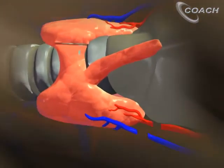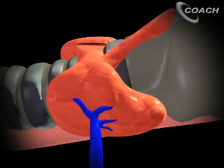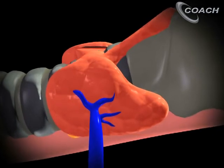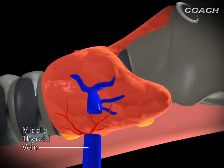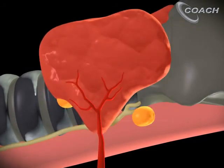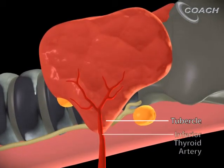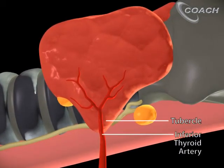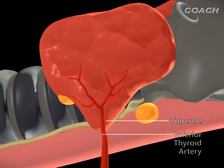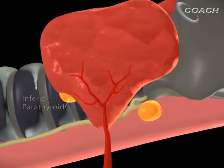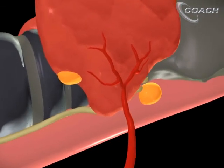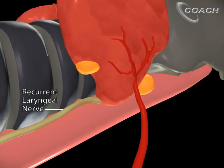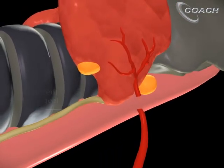We'll rotate the thyroid anteriorly and medially. This will help us identify the middle thyroid vein, which we'll divide. Next, we'll identify the tubercle of the thyroid and the inferior thyroid arteries, which typically enter the thyroid at the tubercle. From here, we identify the inferior and superior parathyroid glands, identify the recurrent nerve, and then divide the inferior thyroid arteries.